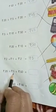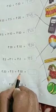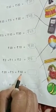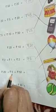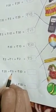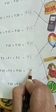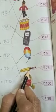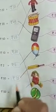Now rupees 20 plus rupees 5 plus rupees 50. 20 plus 50 is 70, and 70 plus 5 is 75. Rupees 75. The cost of this toy is 75, so we will match it with this toy.